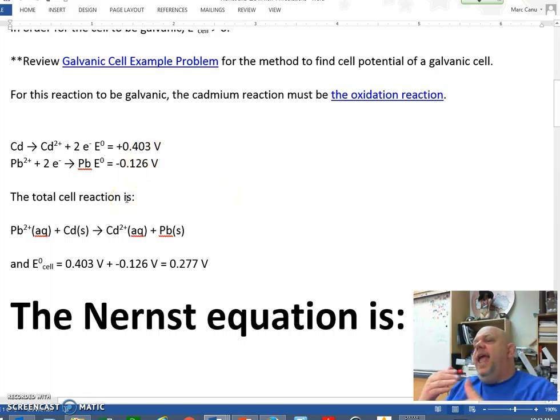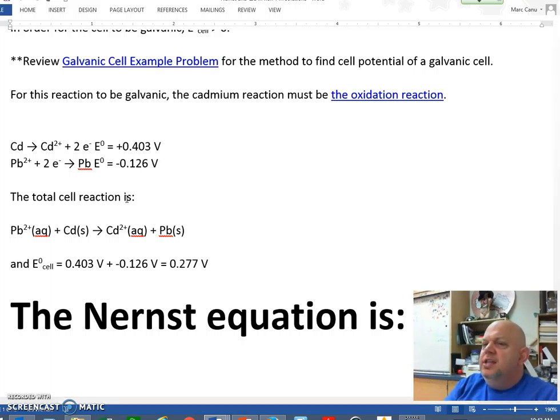You can't just have both lead and cadmium just pick up electrons and become solid. That means one of those are going to have to be reduced, gaining electrons, and the other is going to have to be oxidized, losing electrons. So in order for this thing to be galvanic, the cadmium has to be the one to lose the electrons, in this case, given the value.